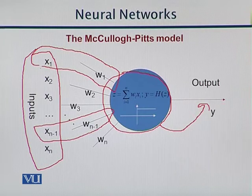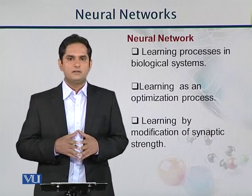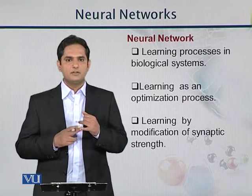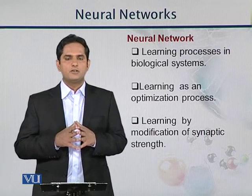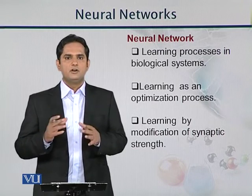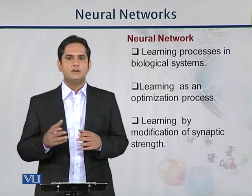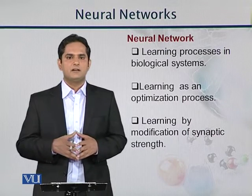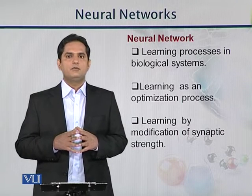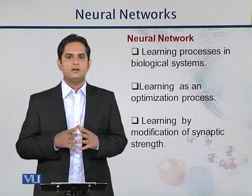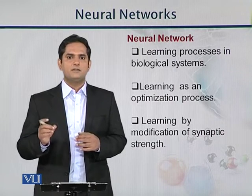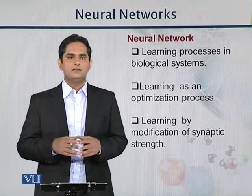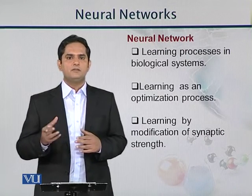Finally, what are the uses of neural networks? In biological systems, they are used for learning processes. They are also used as an optimization process — because we have information about symptoms and their weightage, if some symptoms have less weightage we can remove those, which gives better results. Then there is learning by modification of synaptic strength. Neurons in the brain are triggered based on electrical synapses — electric pulses that can be activated. Similarly, signals in artificial neural networks can be differentiated based on this weightage factor, allowing us to measure the power of those symptoms.